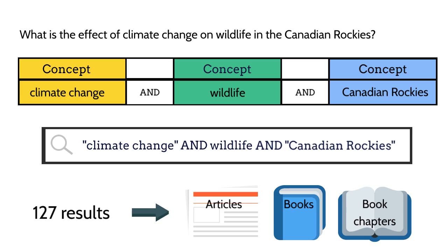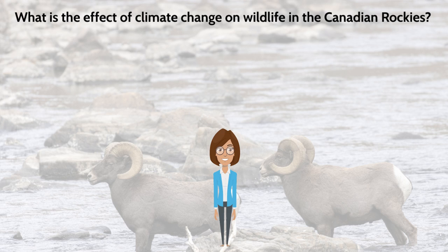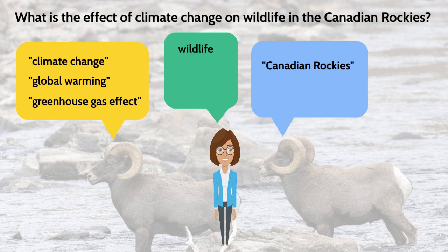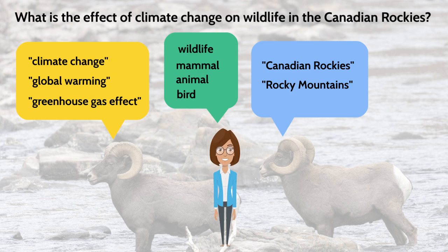Naya thinks about this search. She established her main keywords, but she wonders if she found all the relevant results. She begins to think of other words that express a similar meaning or reflect the same concept. Other ways of saying climate change are global warming and greenhouse gas effect. Other ways of saying wildlife are mammal, animal, and bird. Other ways of saying Canadian Rockies are Rocky Mountains and the Rockies.